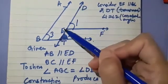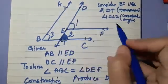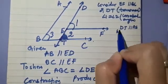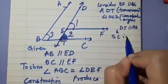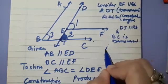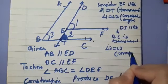Similarly, consider DT parallel to AB. DT is parallel to AB and BC is transversal. So you get angle 2 is equal to angle 3, which is a pair of corresponding angles.